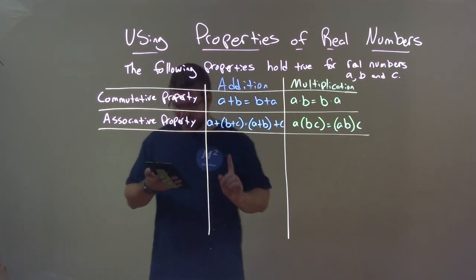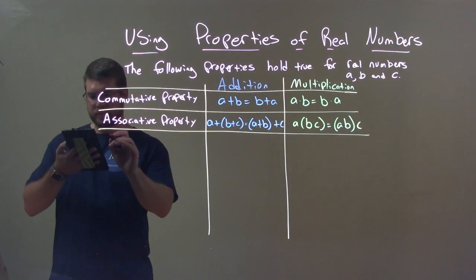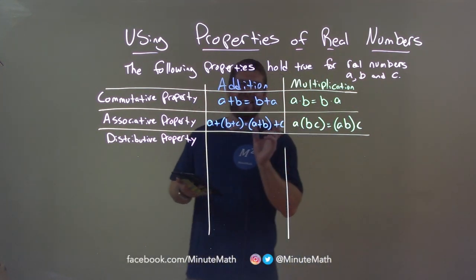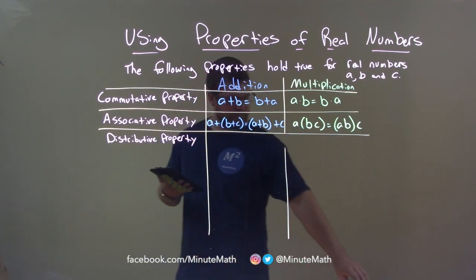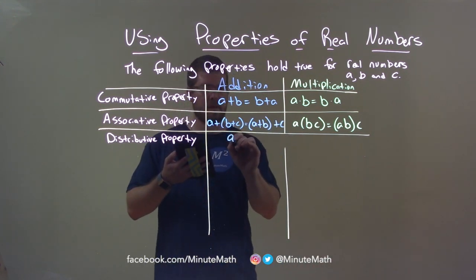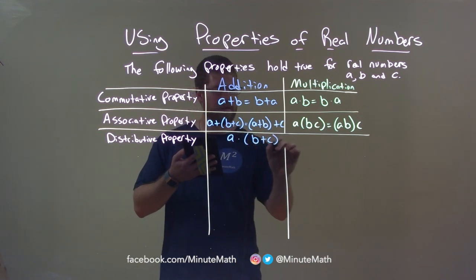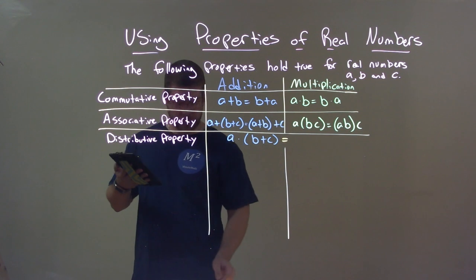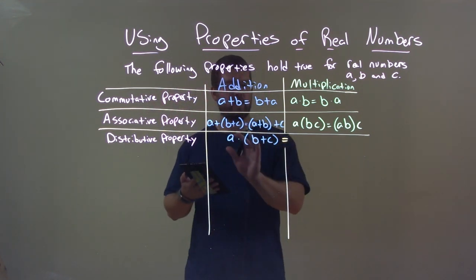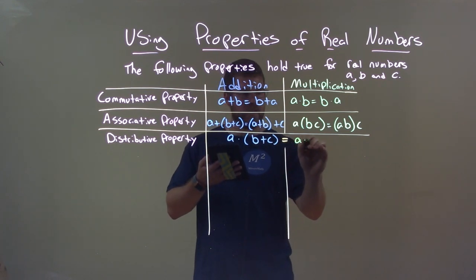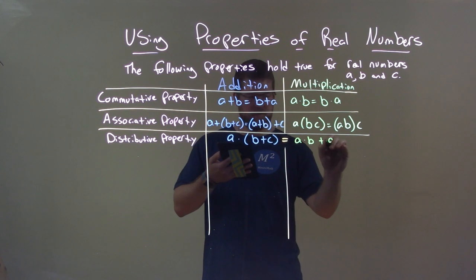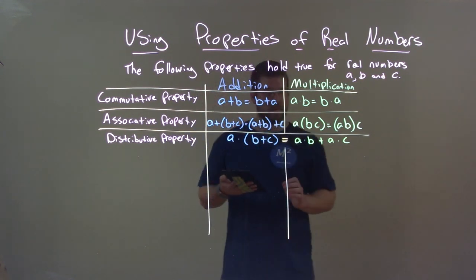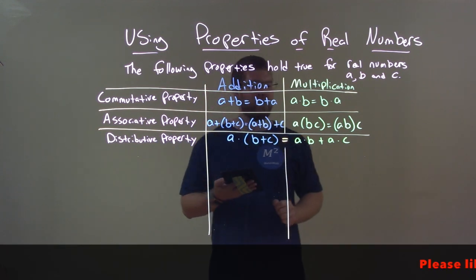The distributive property is actually unique — it's a mix of addition and multiplication together. A times, parentheses, B plus C equals A times B plus A times C. You can see how this lines up with addition and multiplication. We can distribute this A to both parts inside of the parentheses.